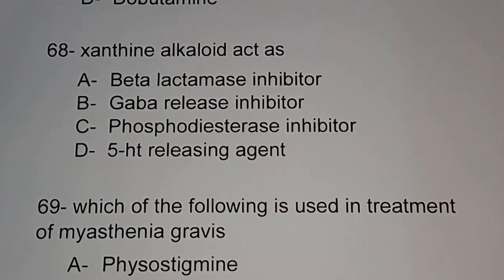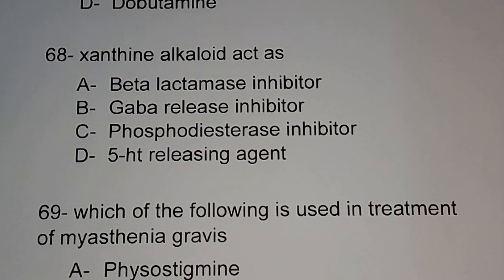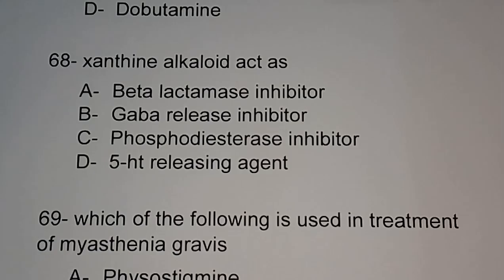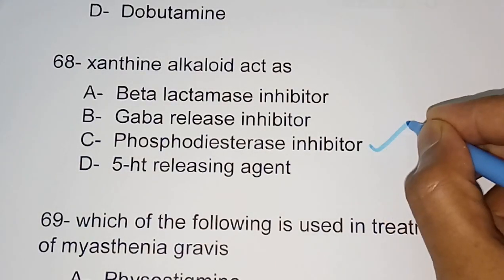Question number 68: xanthine alkaloids act as — beta-lactamase inhibitors, GABA release inhibitors, phosphodiesterase (PDE) inhibitors, or 5-HT releasing agents. The correct answer is option C, phosphodiesterase inhibitor.